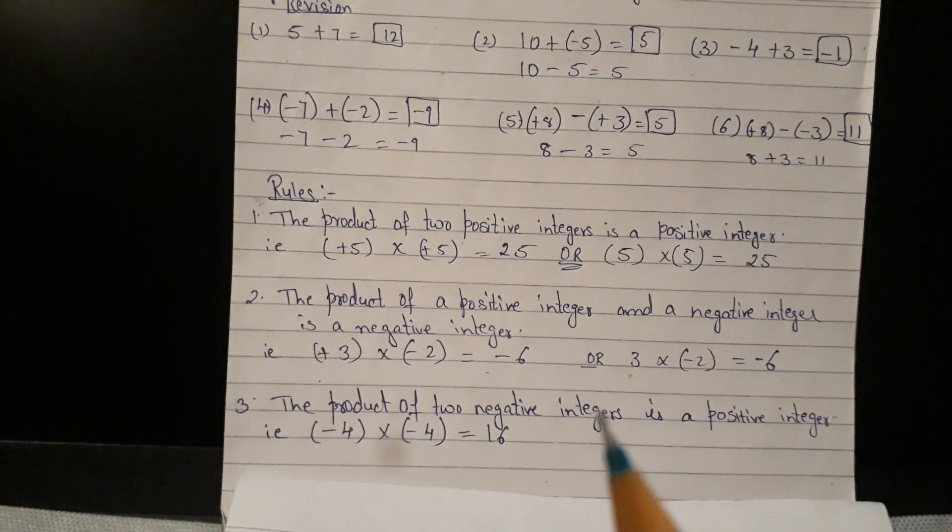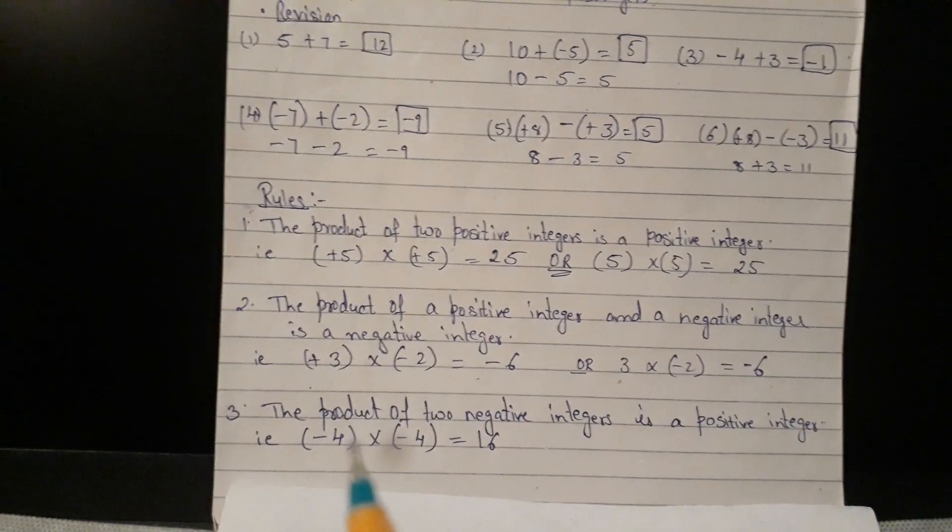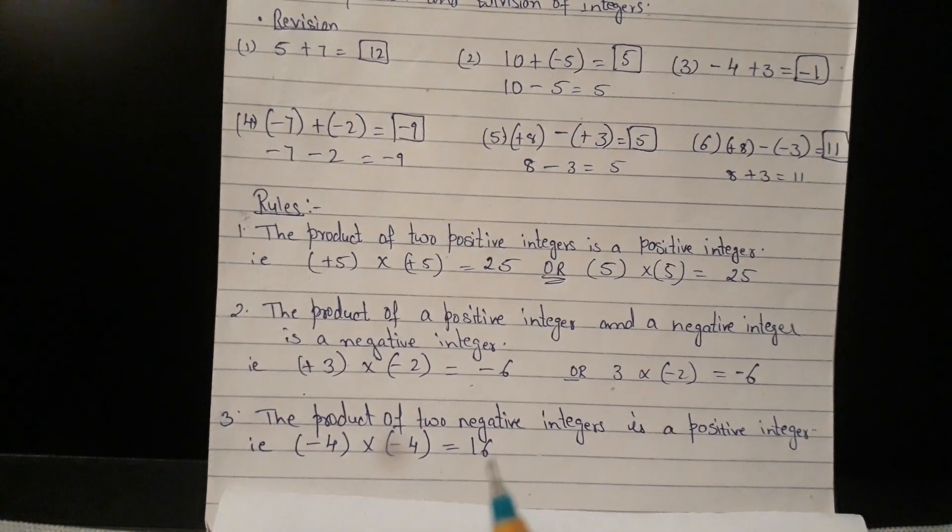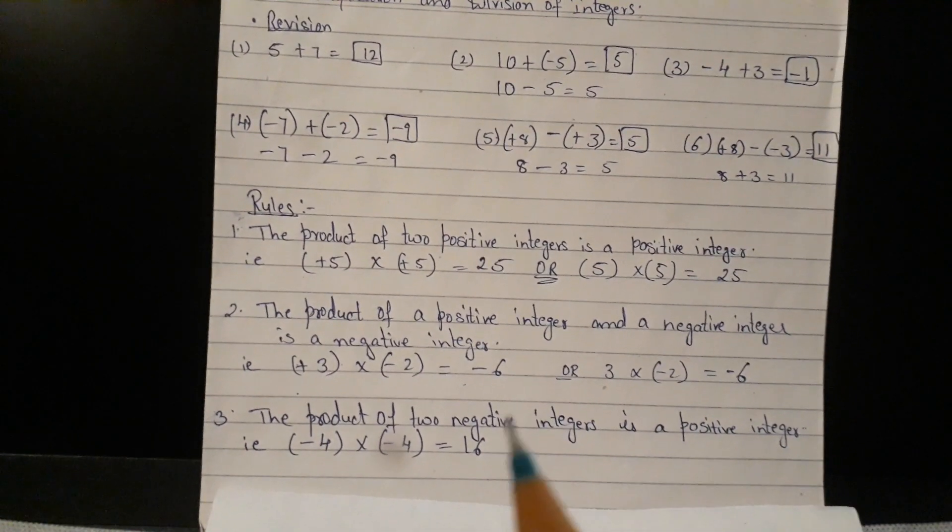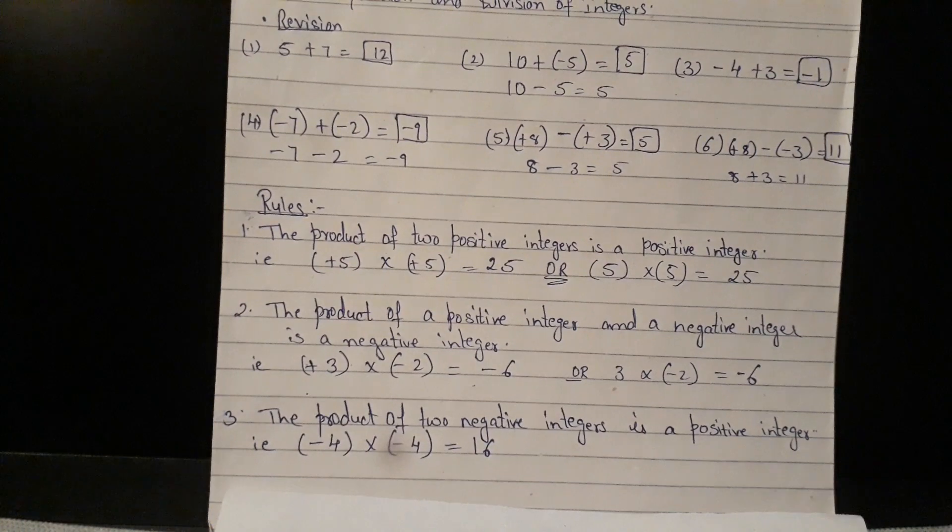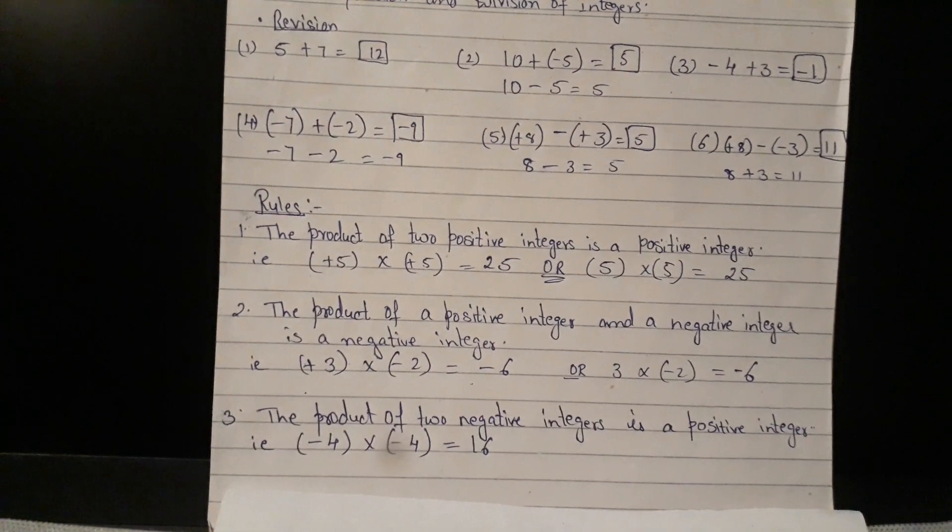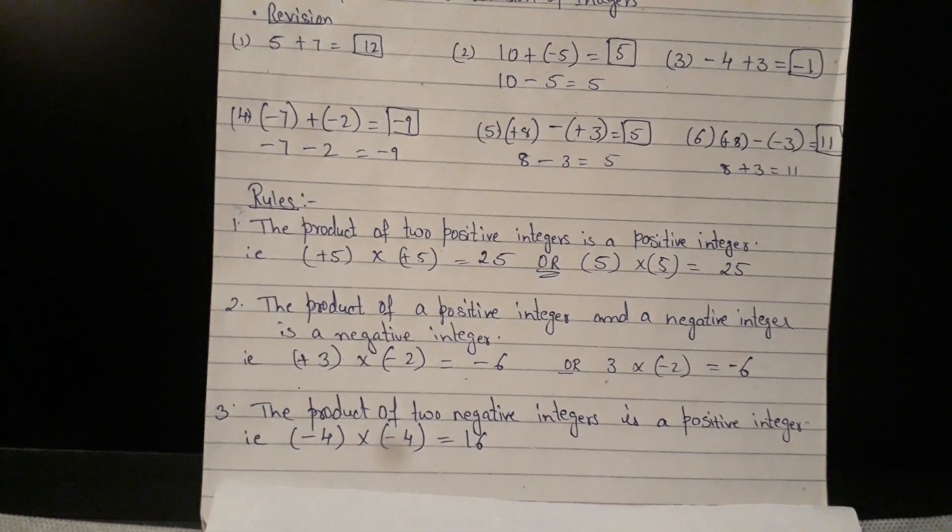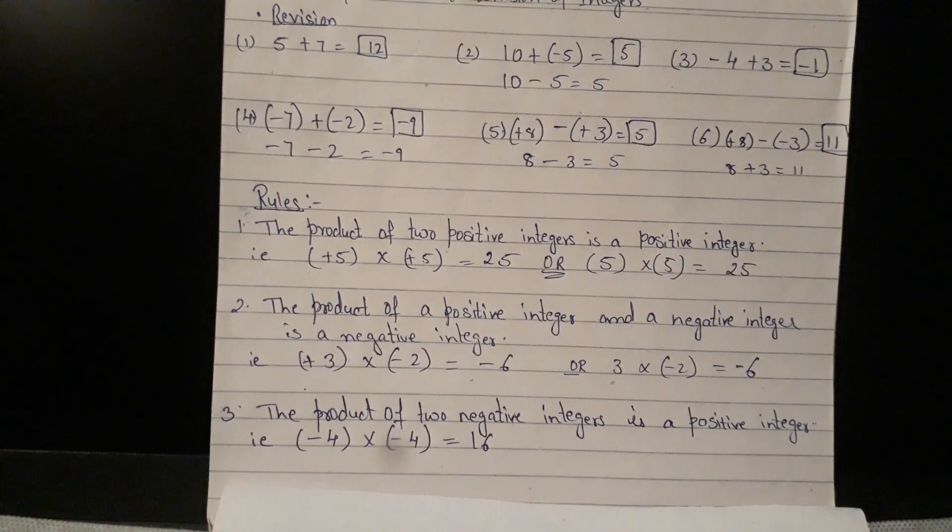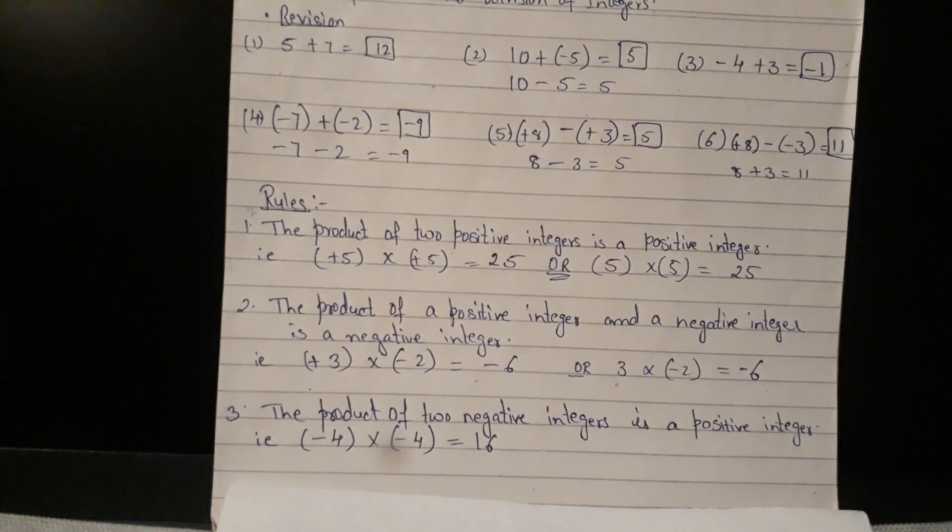Third one, the product of two negative integers is a positive integer. It means, when you get two numbers multiplied with negative signs, minus 4 into minus 4. So that gives you plus 16. Because minus into minus, plus. So we need to remember, plus into plus is plus. Plus into minus or minus into plus, your answer will always be in minus. And minus into minus, plus. So these three things are very easy to remember. Plus into plus is naturally plus. Plus into minus or minus into plus will give you answer in minus. And the last one, minus into minus will become plus.